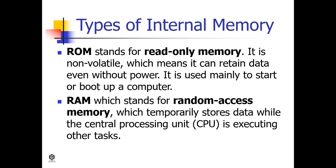First, ROM — ROM stands for read-only memory. It is non-volatile, which means it can retain data even without power. It is used mainly to start or boot up a computer. Once the operating system is loaded, the computer uses RAM, which stands for random access memory, which temporarily stores data while the CPU is executing other tasks. With more RAM, the less the CPU has to read data from external or secondary memory, allowing the computer to run faster.